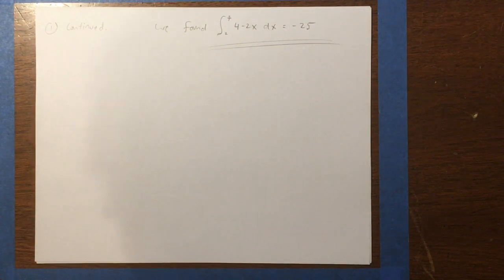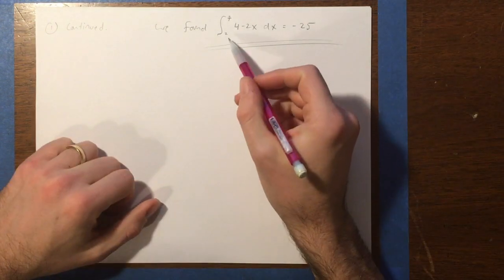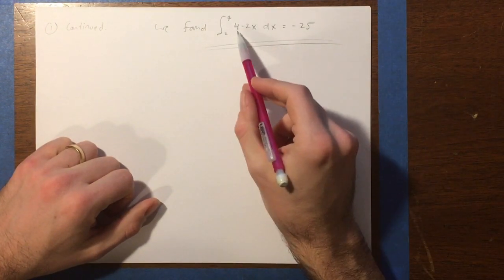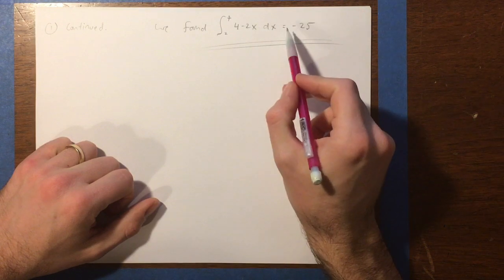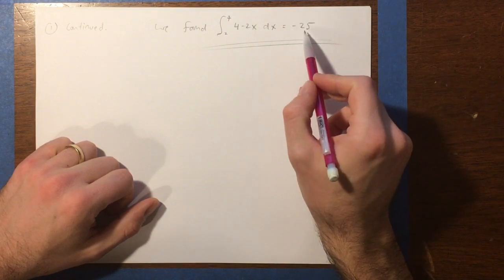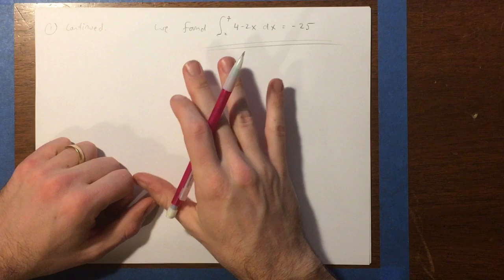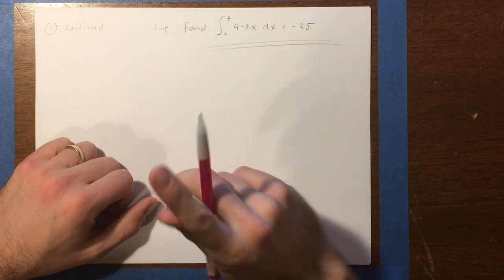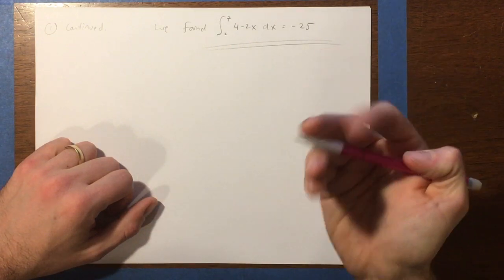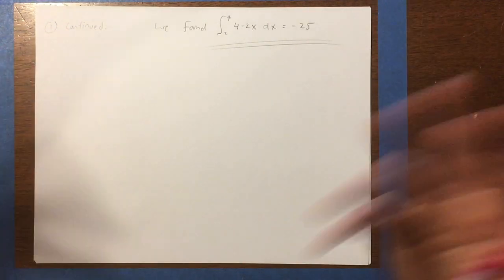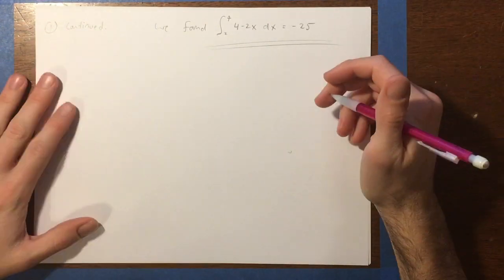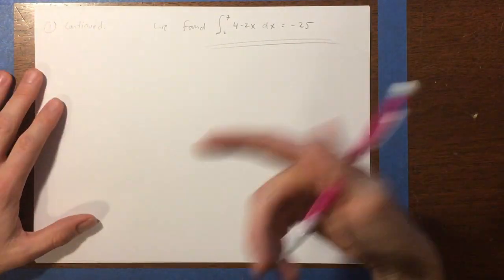Okay, so in the last video I showed you how to do a definite integral using geometry. And we found that the integral from 2 to 7 of 4 minus 2x with respect to x was equal to negative 25. Let's try doing that same definite integral but using the limit of the Riemann sum. And then you can compare and contrast the two different strategies. And hopefully we should come up with the same answer if I do it right.